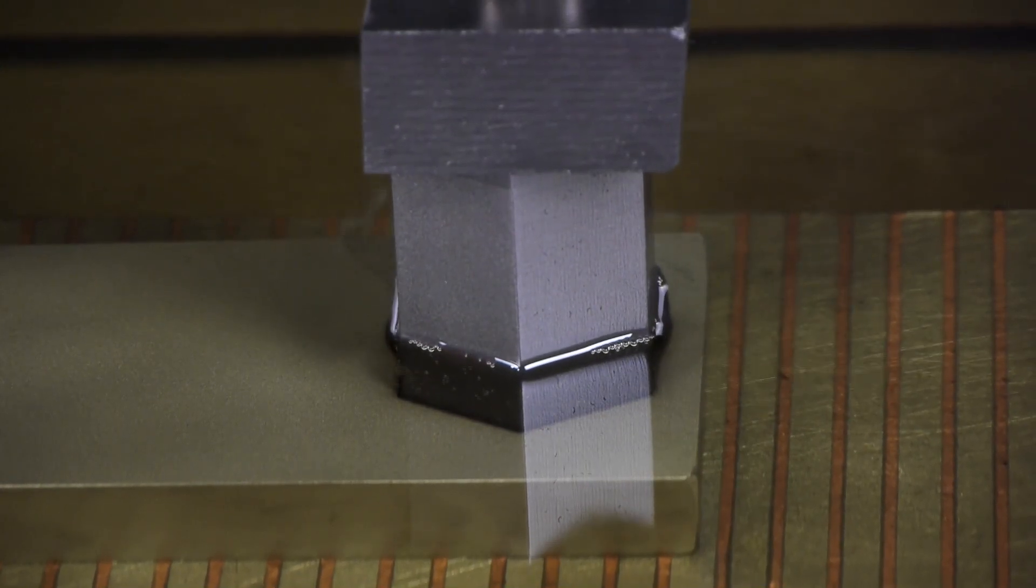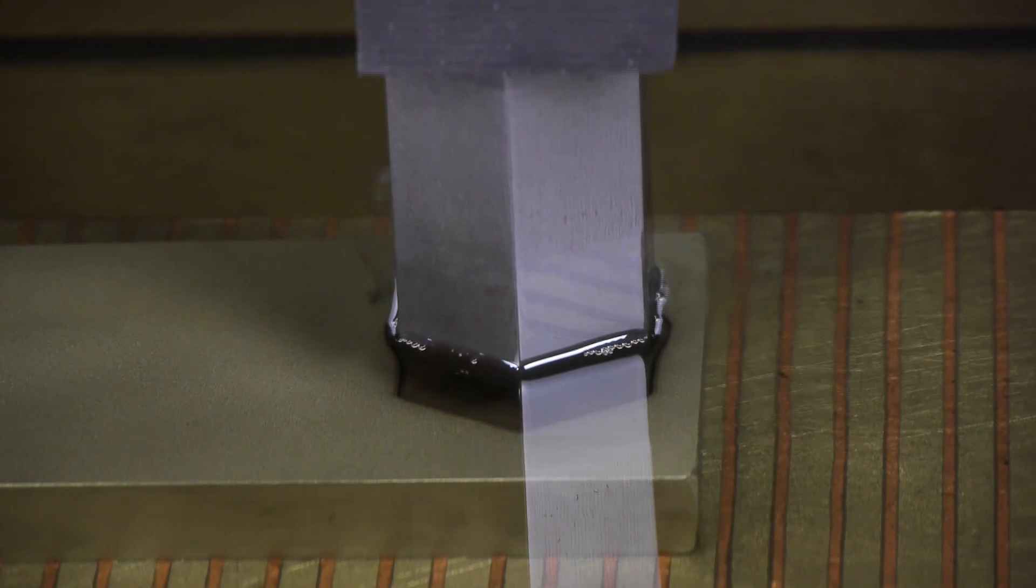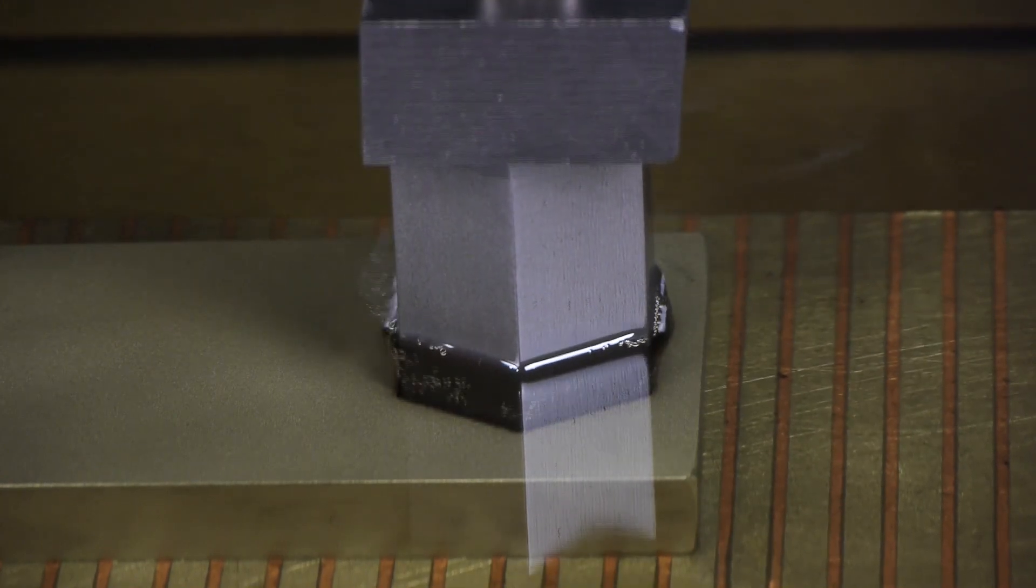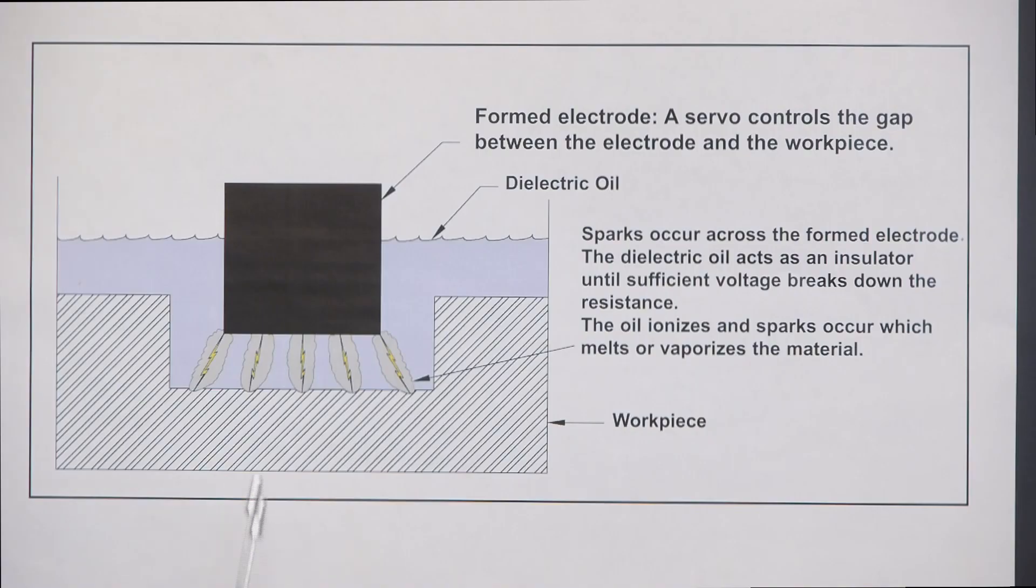Now I'd like to show you what happens inside the cut. In a rough cut, there's a lot of energy applied to the electrode, so the sparks are large and the cavities are large likewise. In a finishing cut, the sparks are very small, and so these cavities become very small, and we can do quite a number of finishing cuts depending on what kind of finish you'd like to have.